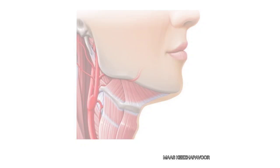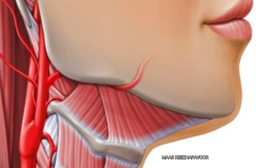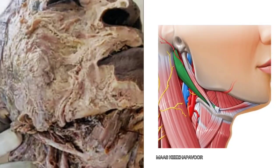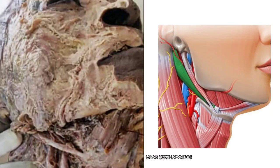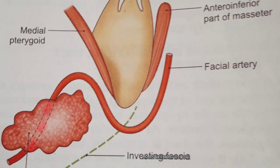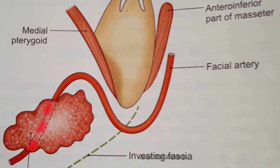It is given off from the external carotid artery within the carotid triangle. The artery runs upwards on the superior constrictor of pharynx, deep to the posterior belly of digastric and stylohyoid muscle. It then grooves the posterior aspect of the submandibular salivary gland.